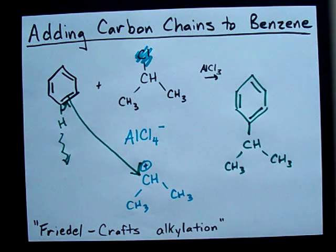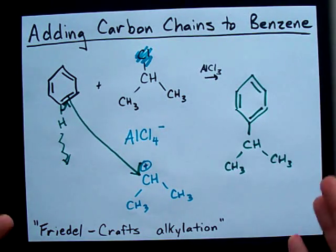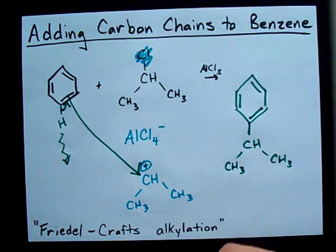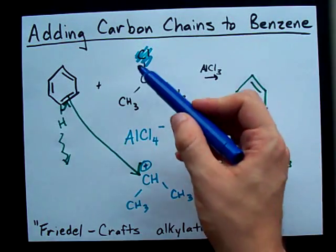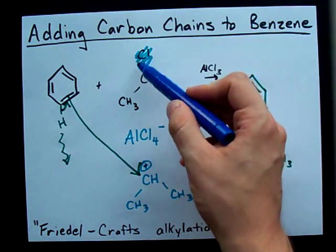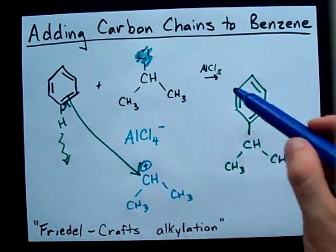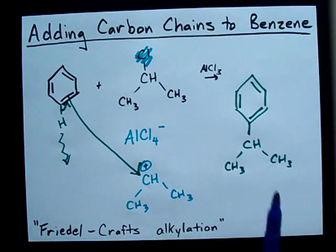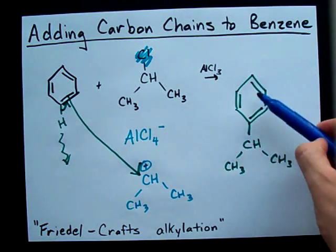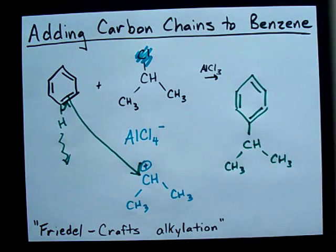It's so easy to predict the products, because all you really have to do is cut off the Cl from your alkyl halide and then just attach that to the benzene ring. It doesn't even matter which one it goes on. It's the easiest thing in the world.